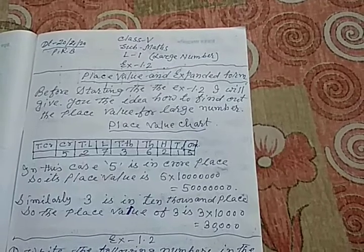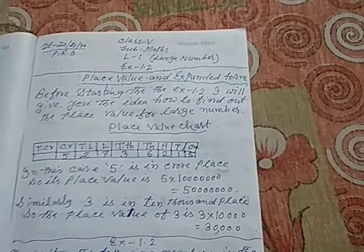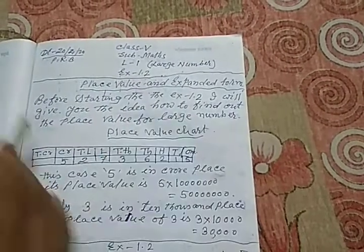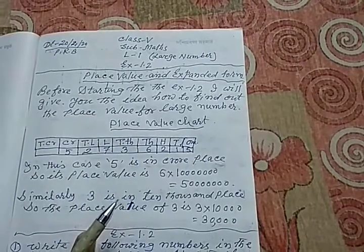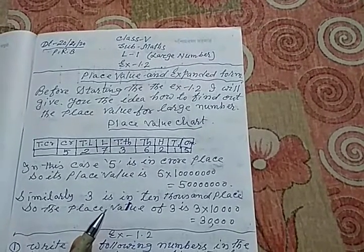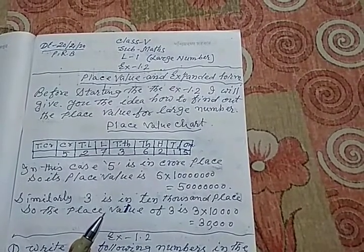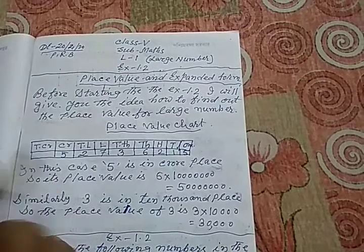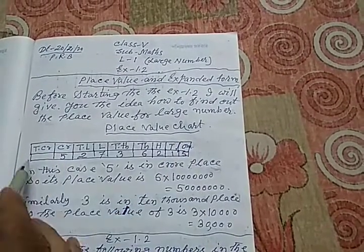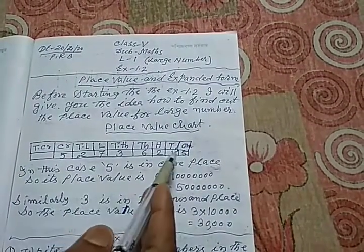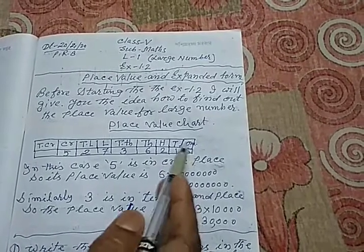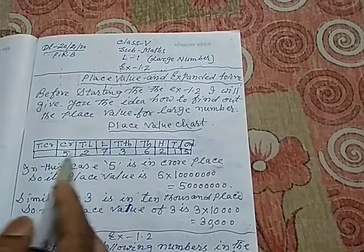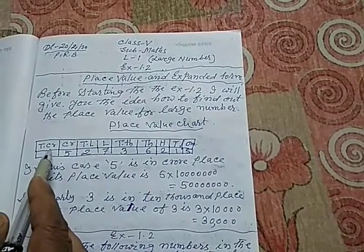This lesson 1.2 is about place value and expanded form. Before starting the exercise 1.2, I will give you the idea how to find out the place value for large numbers. Here, look at the picture. This is a place value chart. Since this chapter is about large numbers, that is why I have drawn the place value chart up to 10 crore place.